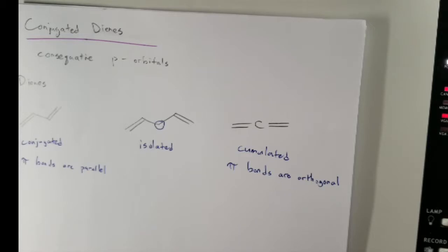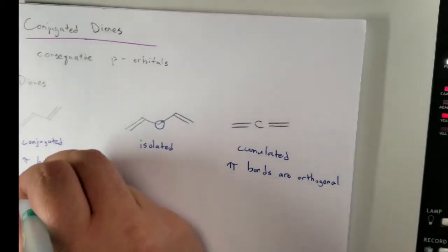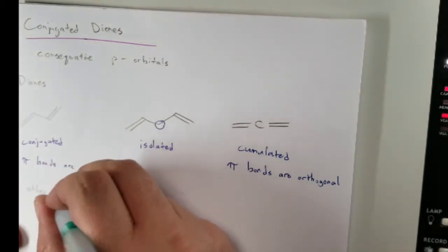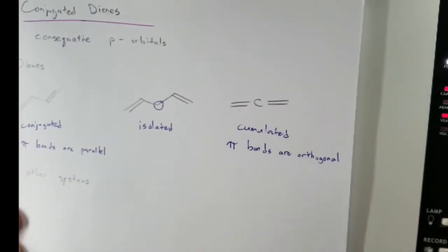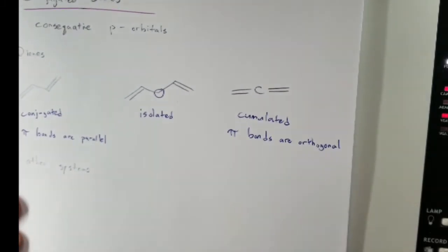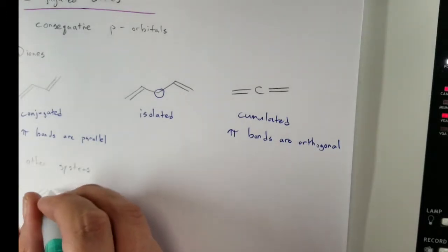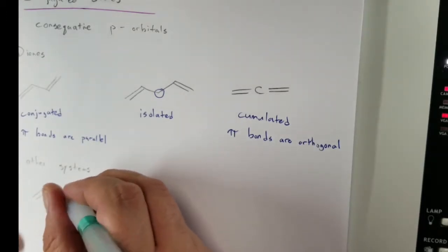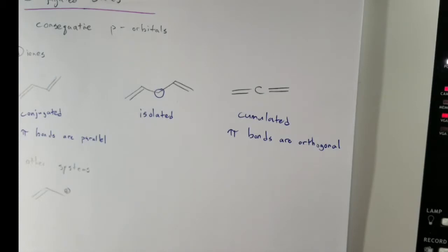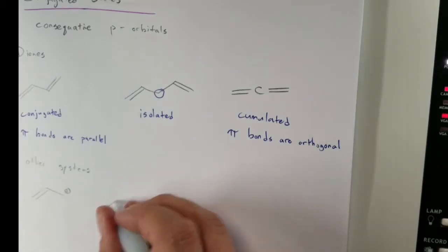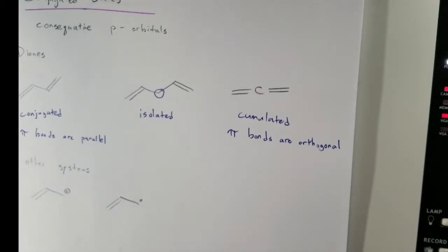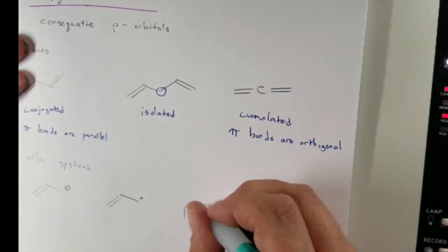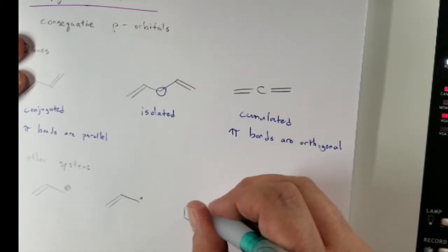It turns out there are other types of conjugated systems. These are also referred to as being conjugated, basically because of how the pi bonds work out. We have the allylic radicals or carbocations, and additionally we have benzylic carbocations and radicals.